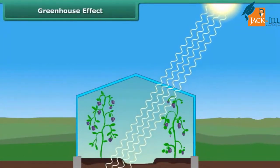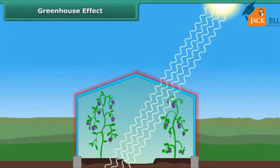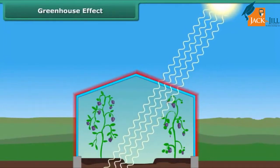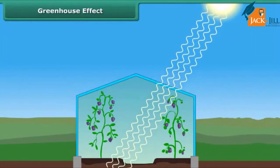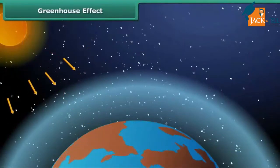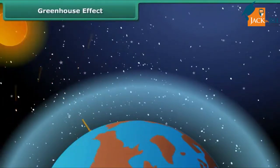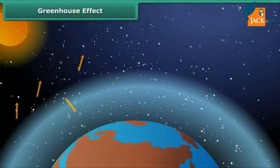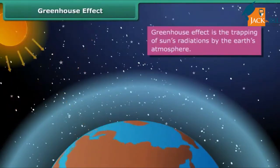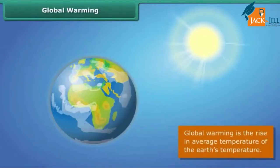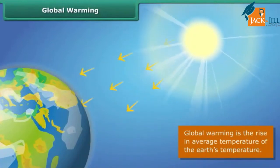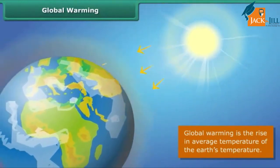Similarly, greenhouse gases like carbon dioxide, methane, and nitrous oxide in the atmosphere act like glass panes. When the sun's radiation reaches our atmosphere, some rays are reflected back into space and some are trapped by greenhouse gases, causing the atmosphere of the earth to warm up. This is known as global warming.